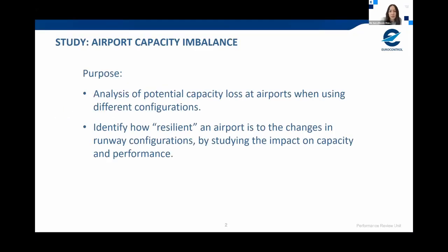The objective of the study was to extend current operational performance studies at airports by identifying the potential capacity loss when using different runway configurations. This allows us to identify airports with issues in terms of resilience to changes in runway configurations, suffering deterioration in capacity, performance, or both. To be clear: when we talk about airport capacity in the technical note and in today's webinar, we are referring to runway system and taxiway system related capacity and performance. We assume runway configurations have no impact on other components such as apron or terminal capacity.